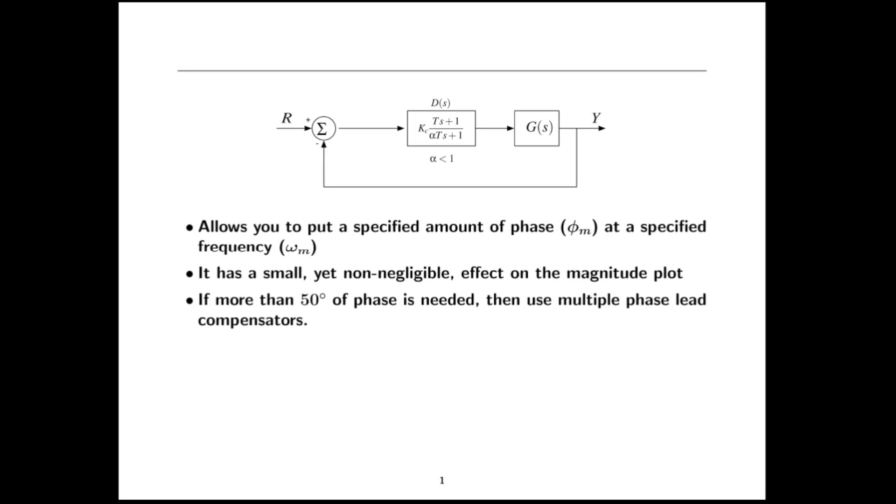So here's the type of closed loop control system that we're going to be working with. We have a reference input R and output Y. We have some plant transfer function G of S and then the compensator we'll call it D of S, which is the phase lead compensator.